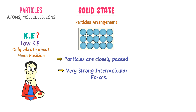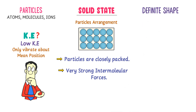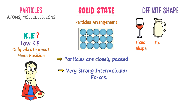On the other hand, solids have definite shape. For example, the shape of this glass is fixed, the shape of this jug is fixed, and the shape of this pot is fixed. They never change their respective shapes. So we say that solids have fixed shapes.